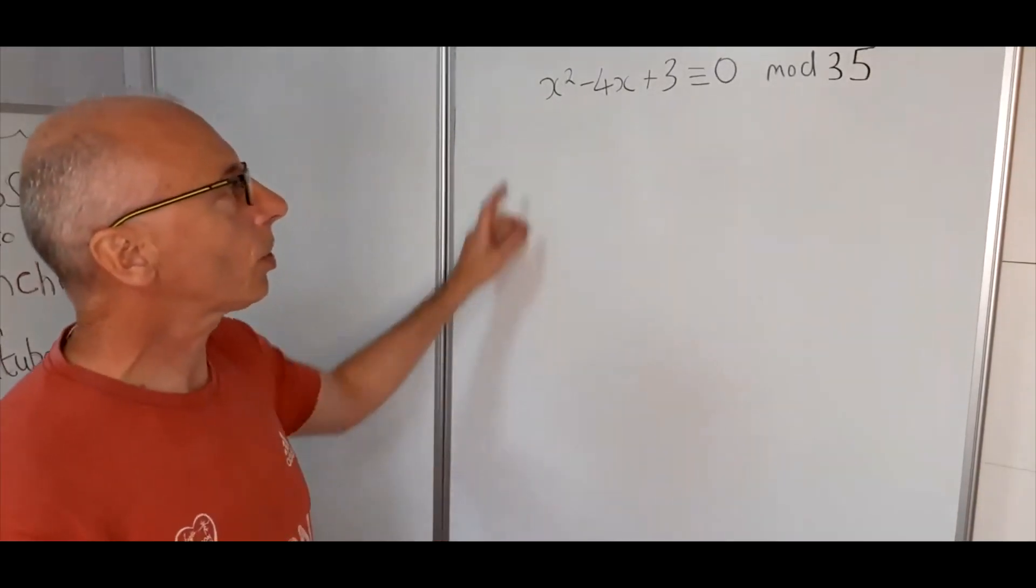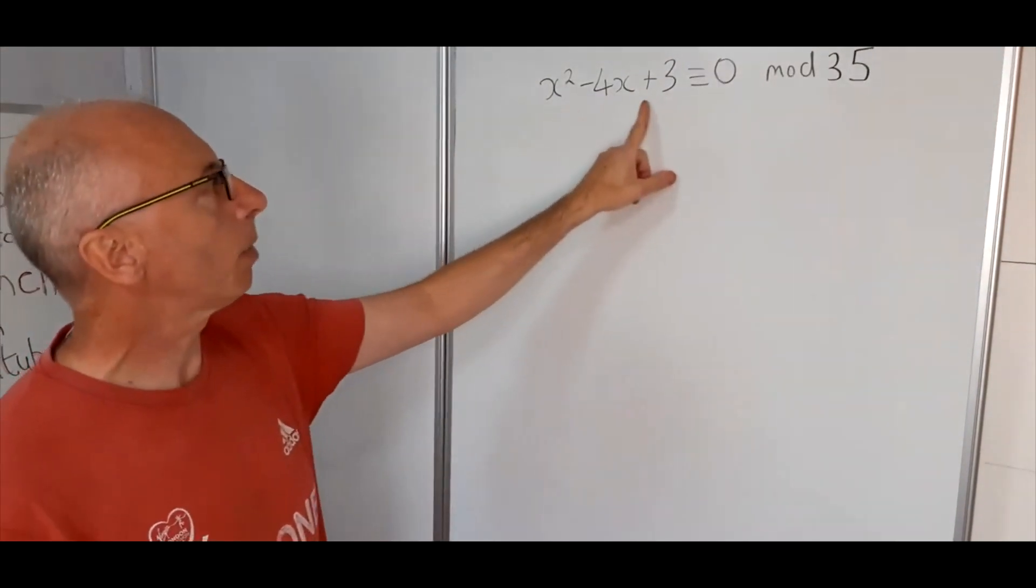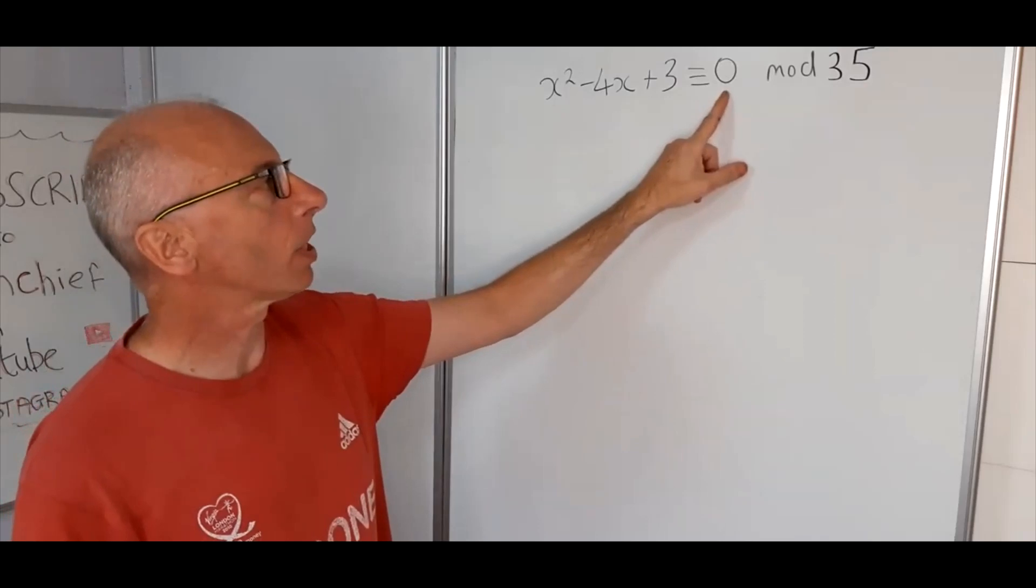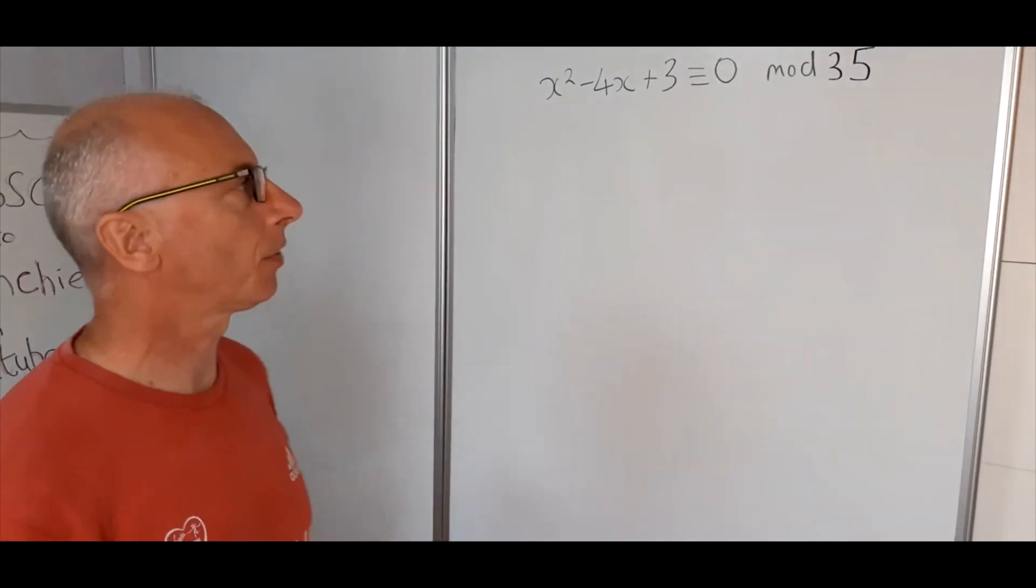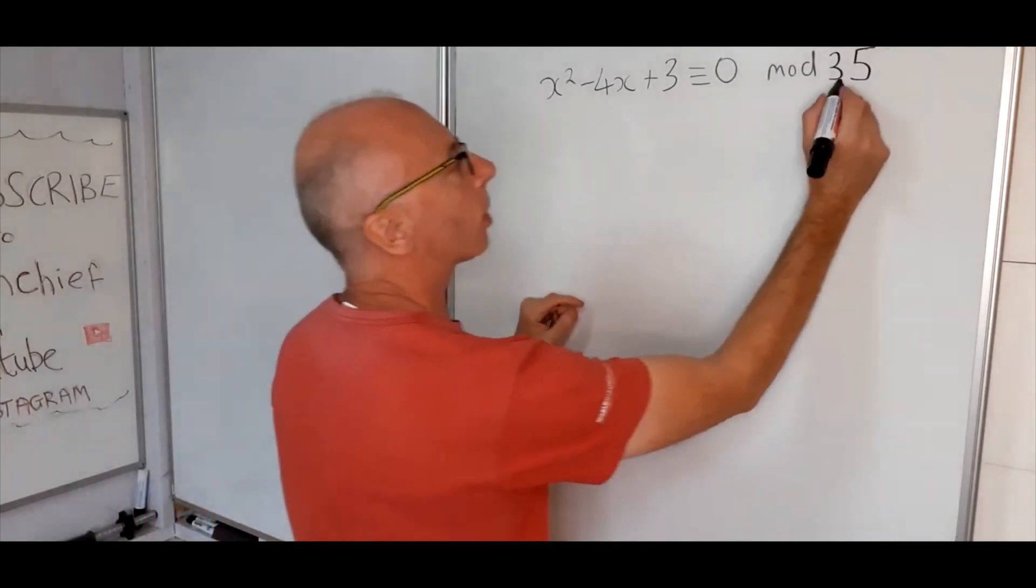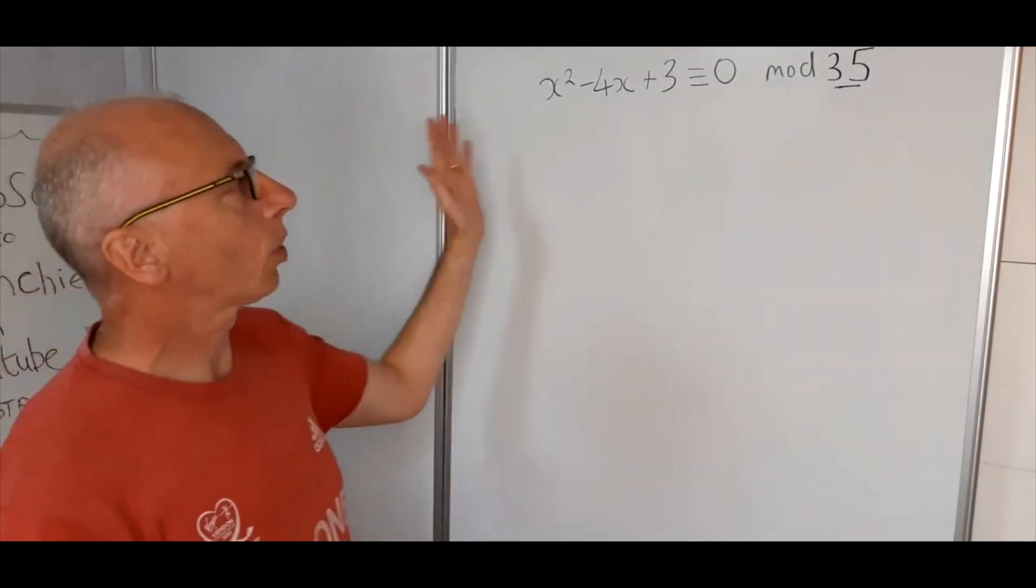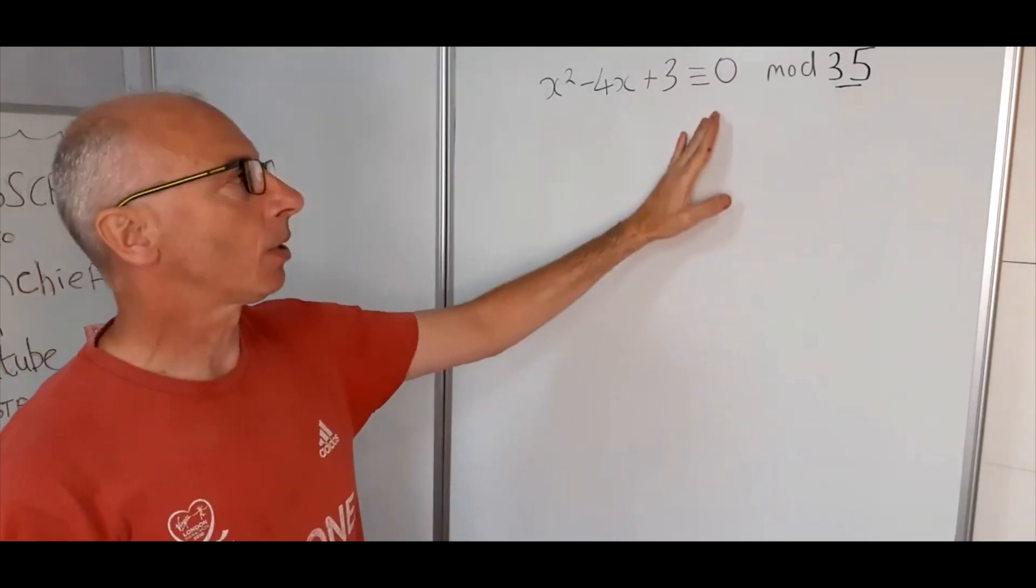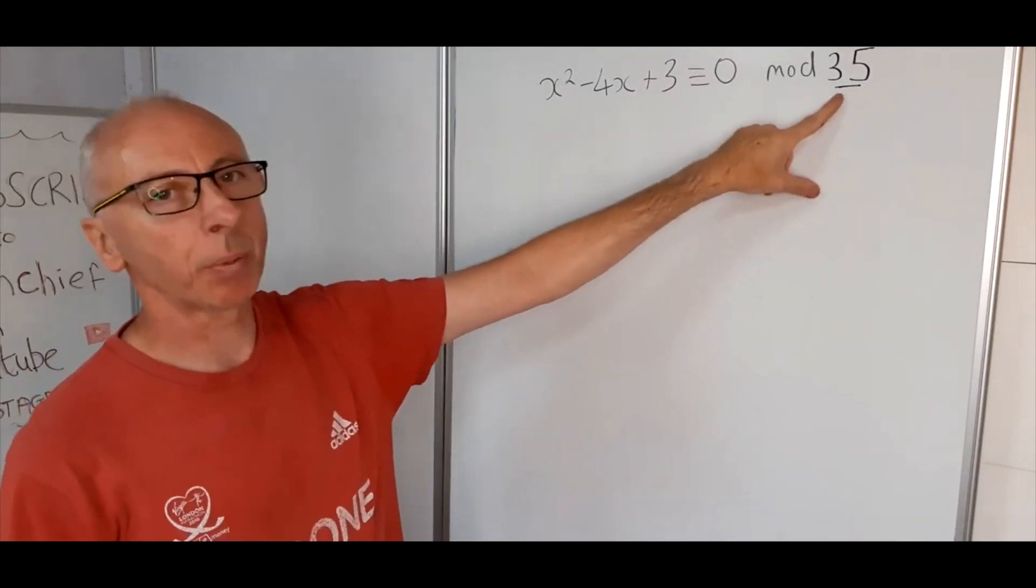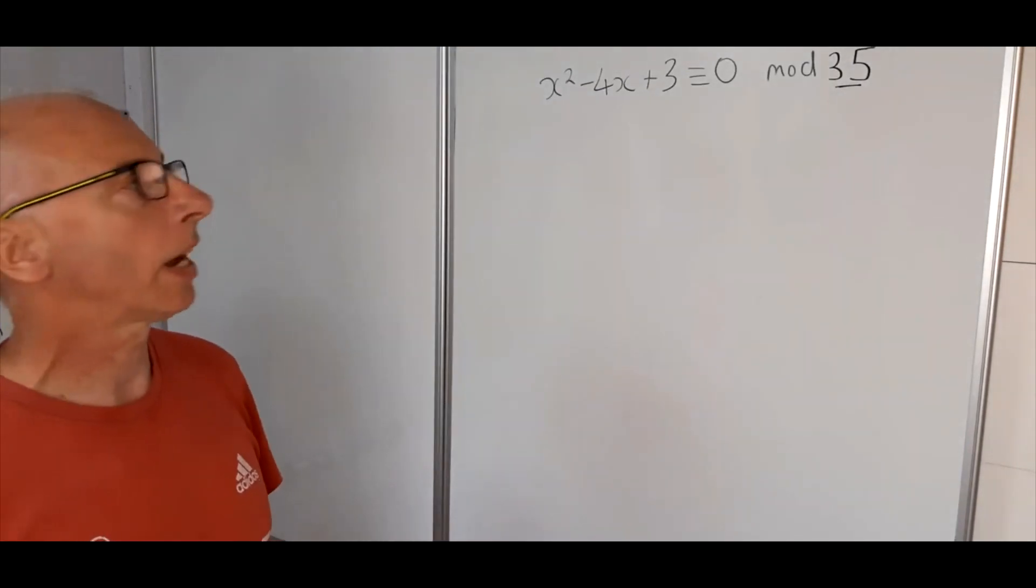Okay, so we've got a question here. We want to solve this quadratic congruence: x squared minus 4x plus 3 is congruent with 0 modulo 35. Now everything is all good until we have a look at this modulo 35. We can't just plug in the solution to this modulo 35 because this is not a prime number, we're going to have to do something different.